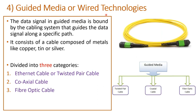Now let us understand guided media in detail. The data signal in guided media is bound by the cabling system that guides the data signal along a specific path — the data will not get transferred randomly or haphazardly. It consists of cables composed of metals like copper, tin, or silver. These are classified into three types: twisted pair cable, coaxial cable, and fiber optic cable.